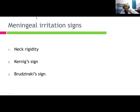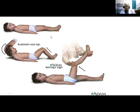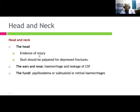Meningeal irritation signs include the three cardinal signs: neck rigidity, Kernig's sign, and Brudzinski's sign. With Brudzinski's sign, when you flex the neck, the leg rises at the knee level. With Kernig's sign, when one leg is extended, the other leg also flexes. Head and neck examination should include palpation of the skull for rib fractures, checking for ear and nose hemorrhage, CSF leakage, and fundoscopy for papilledema or sub-hyaloid retinal hemorrhages.